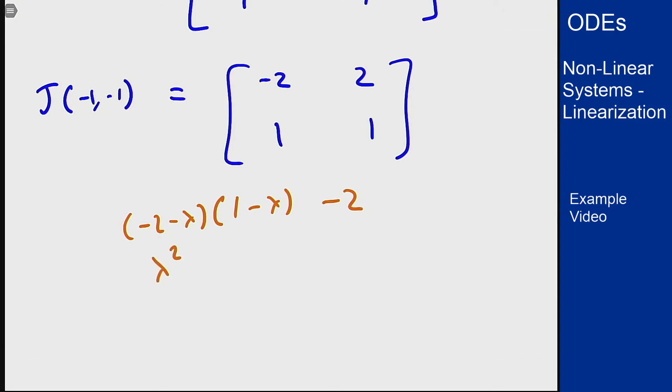I see a minus lambda and a plus 2 lambda so plus lambda. I see minus 2 and minus 2. So lambda squared plus lambda minus 4.